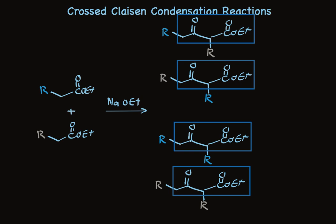However, there are structural pairs that can be used together to do what we call a crossed Claisen condensation. It's also referred to as a mixed Claisen condensation because it's a mixture of two different esters.